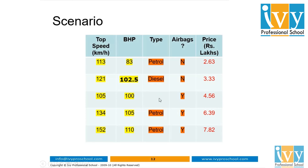The missing value of the type column will be replaced by the mode of the type column. We use mode because type is a categorical column, whereas BHP was a continuous column so its median was used. Petrol is the mode of this column because petrol occurs three times whereas diesel occurred only once.